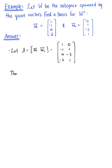Then we can conclude since W is equal to the span of these two vectors, vector W sub 1 and vector W sub 2, that subspace W is equal to the column space of matrix A.